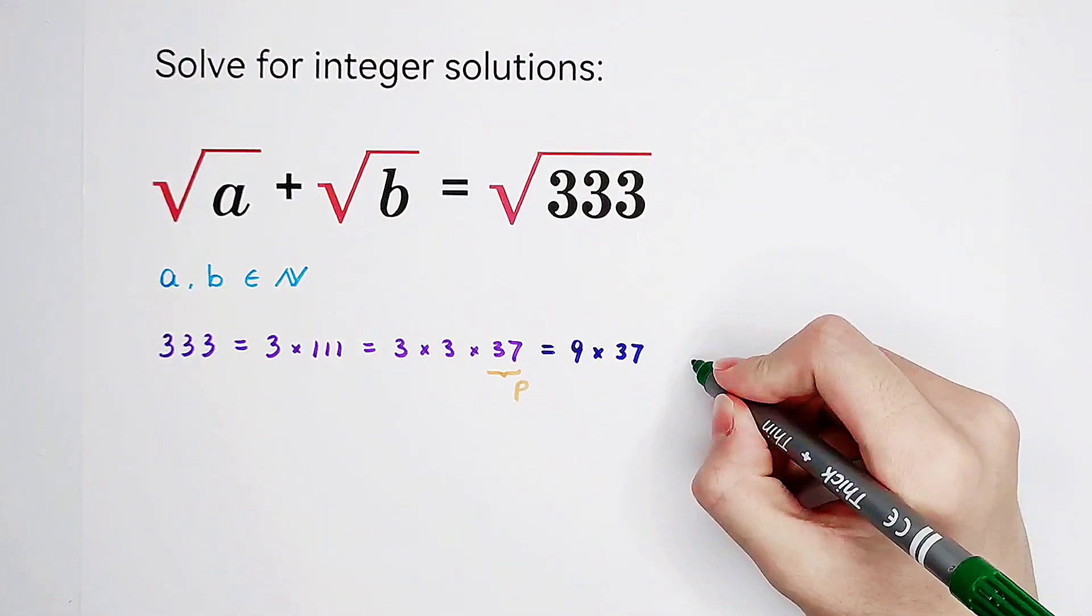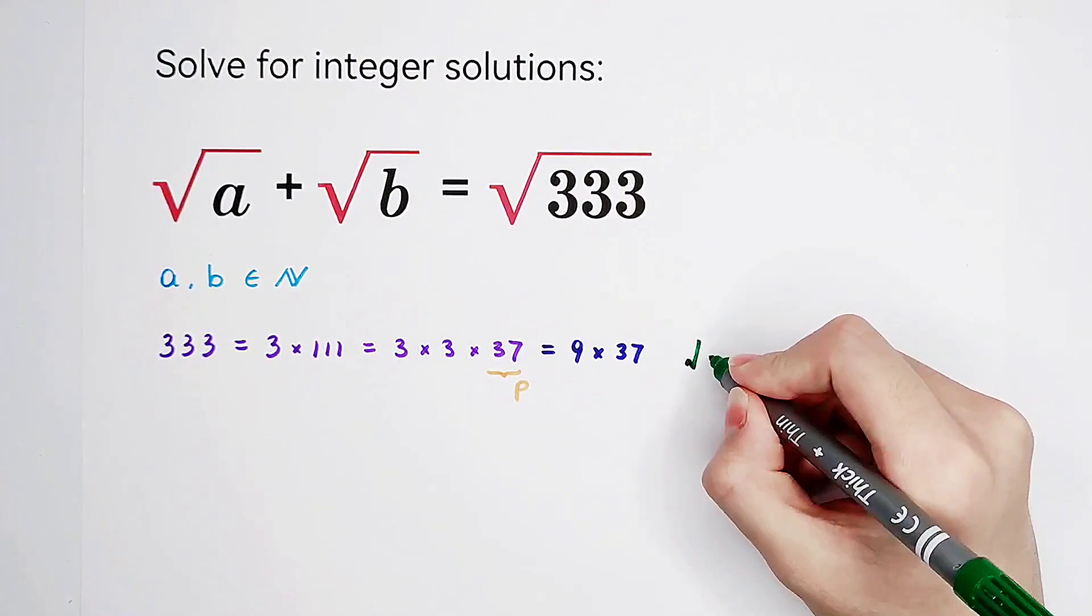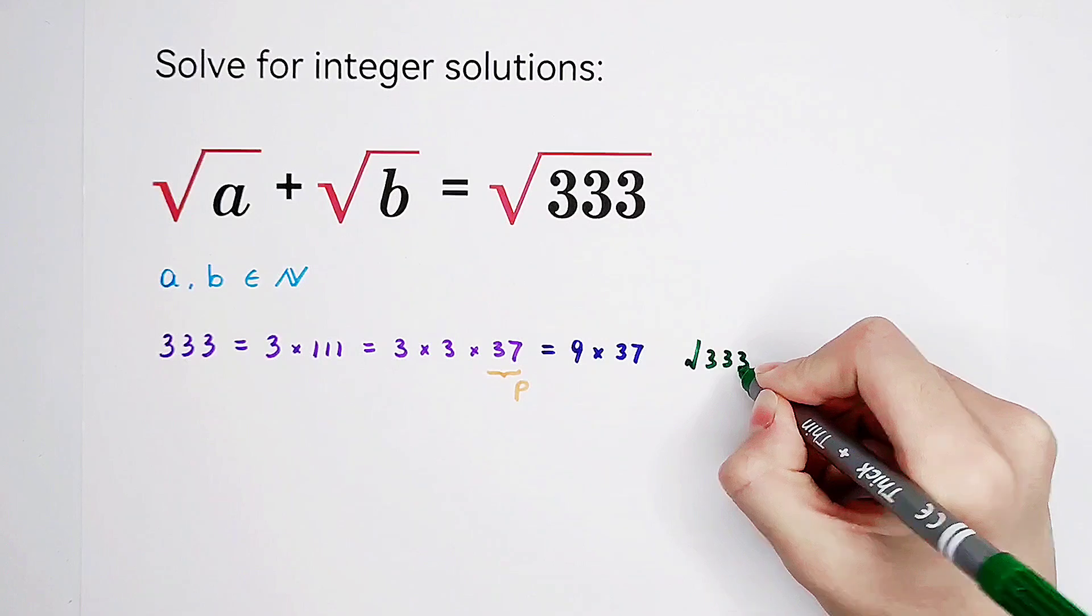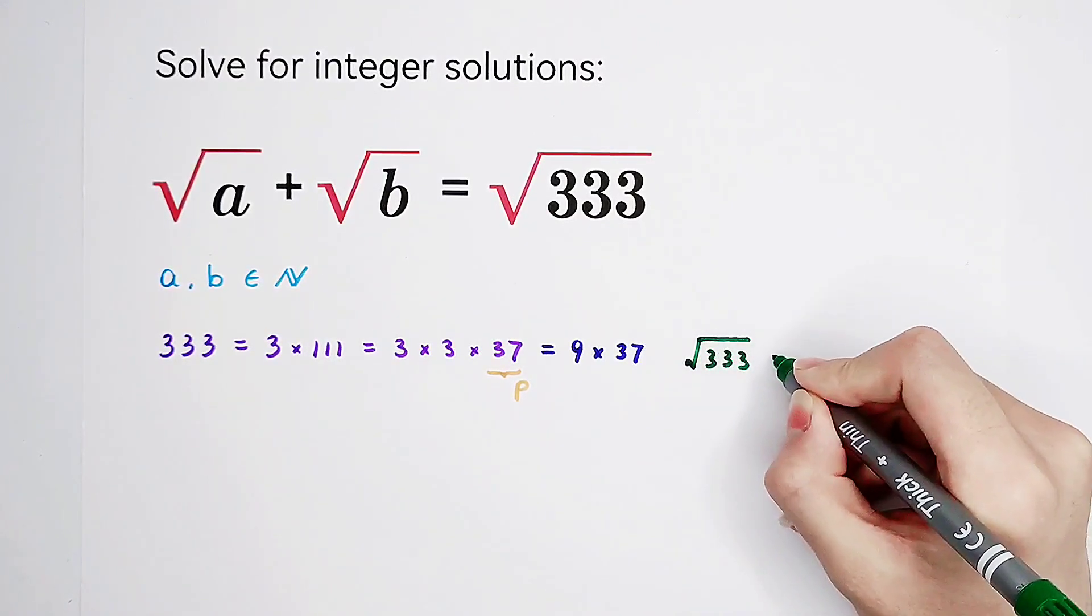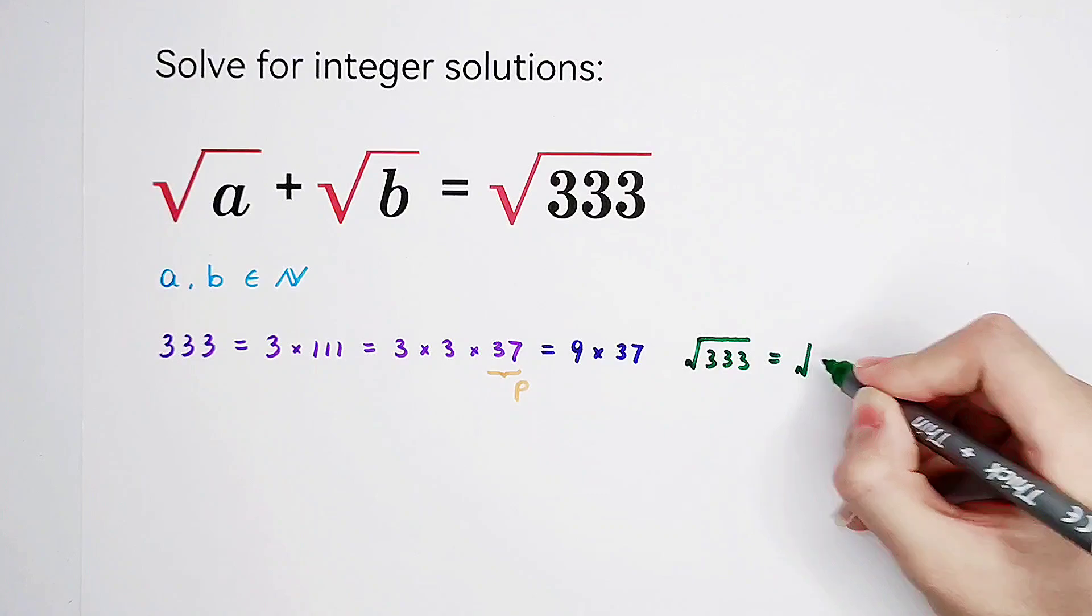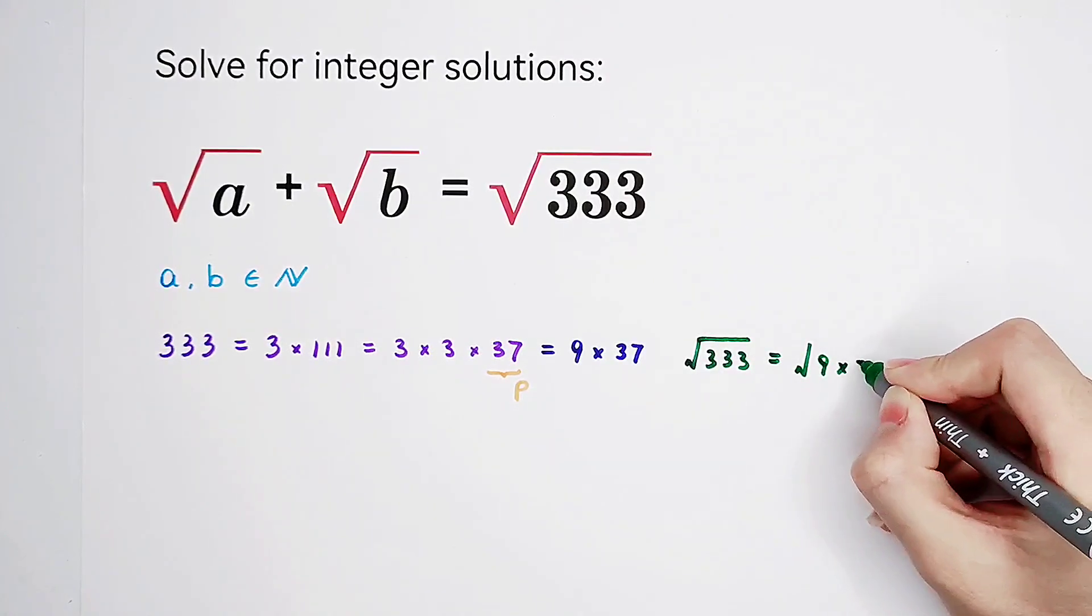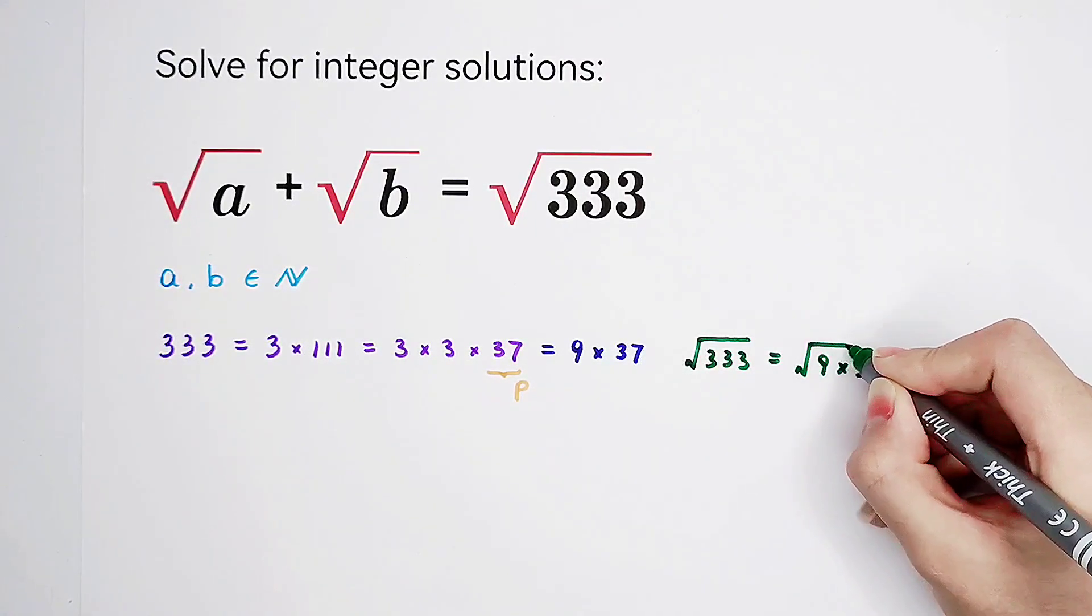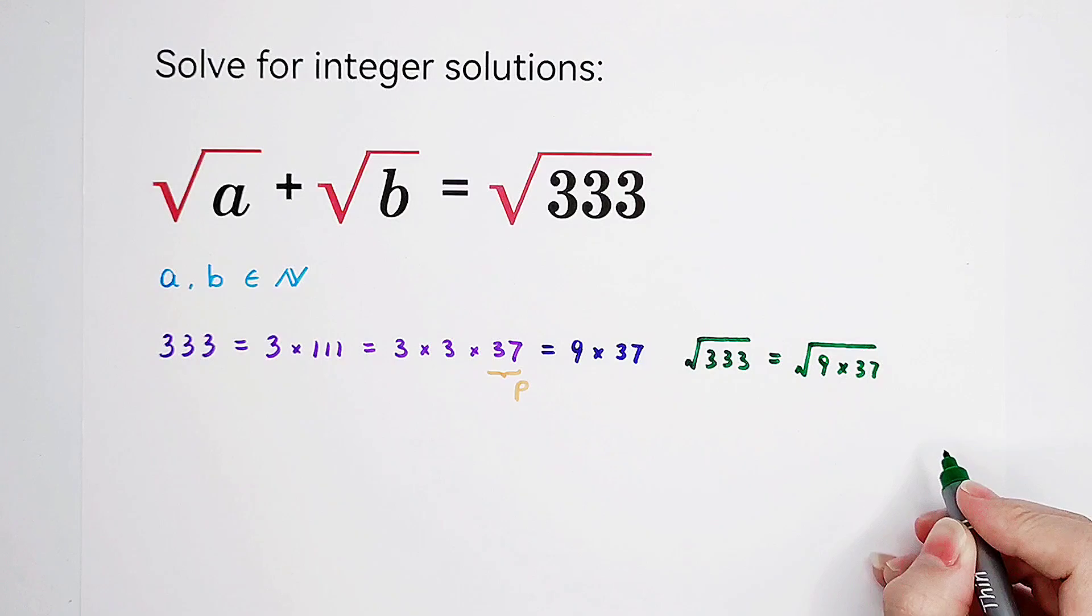So that means, if 333 puts on his coat, square root of 333, it should be written as square root of 9 times 37. And we know that 9 is, of course, 3 squared.